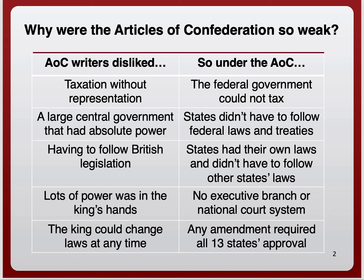One of the big powers the national government lacked was the power to tax. The Articles of Confederation were eventually viewed as being very weak — though you'll read an account from Thomas Jefferson today that suggests maybe they weren't so weak. Nonetheless, the Articles had a unique system of governing that gave states more power, and this led to weaknesses and issues that would eventually lead to the Articles being changed.